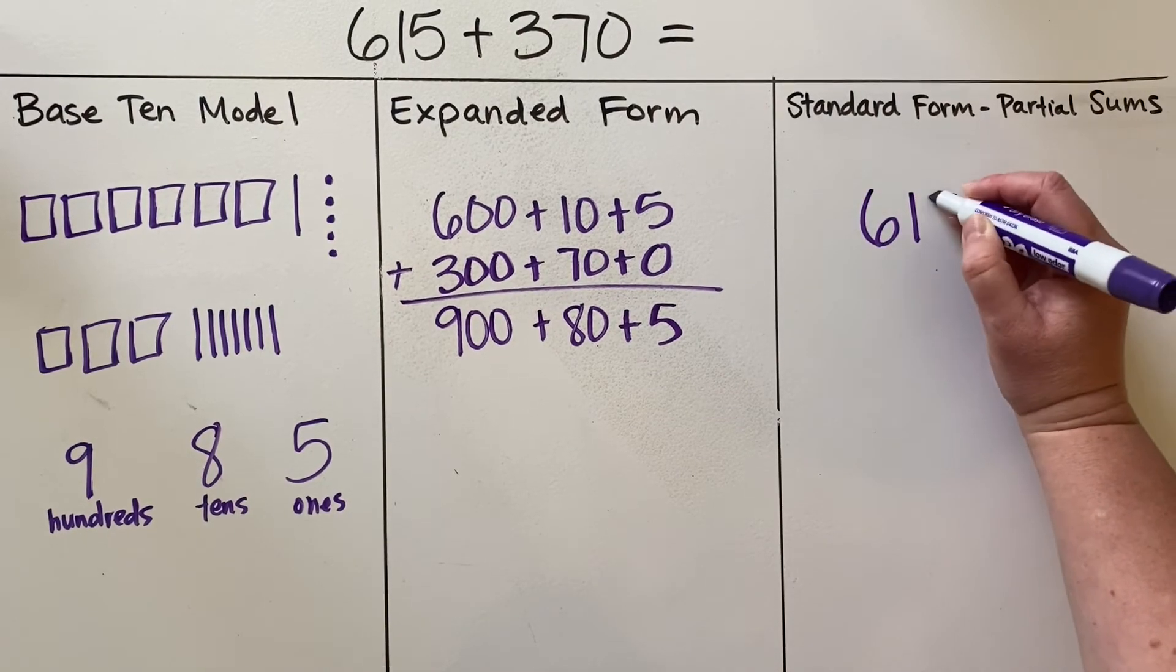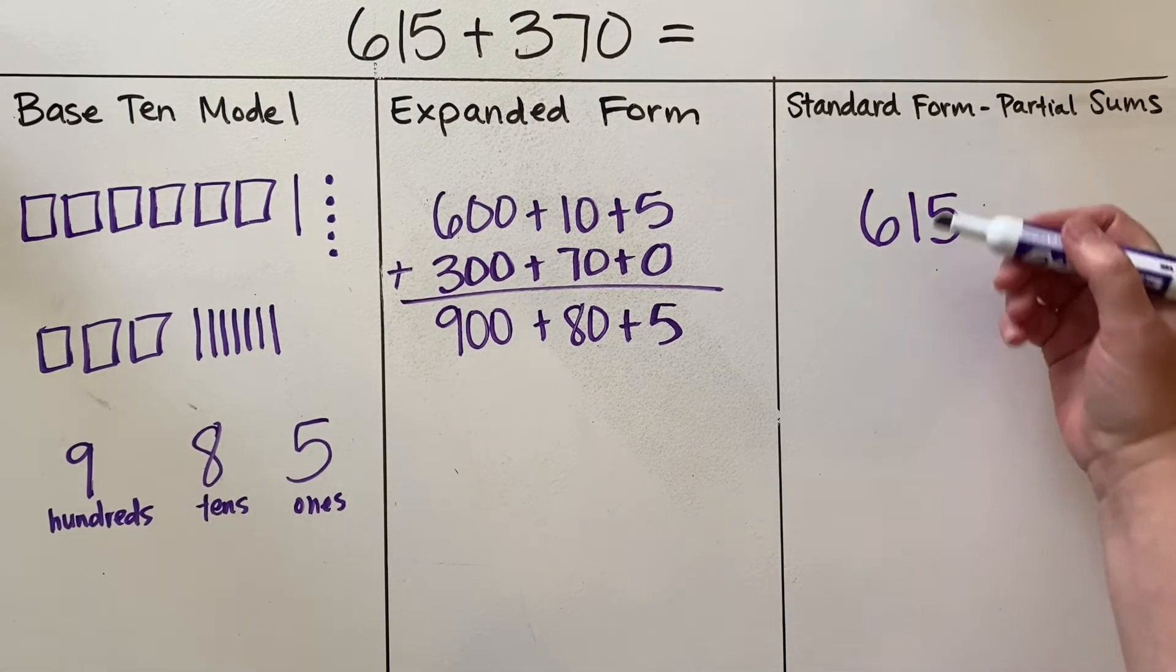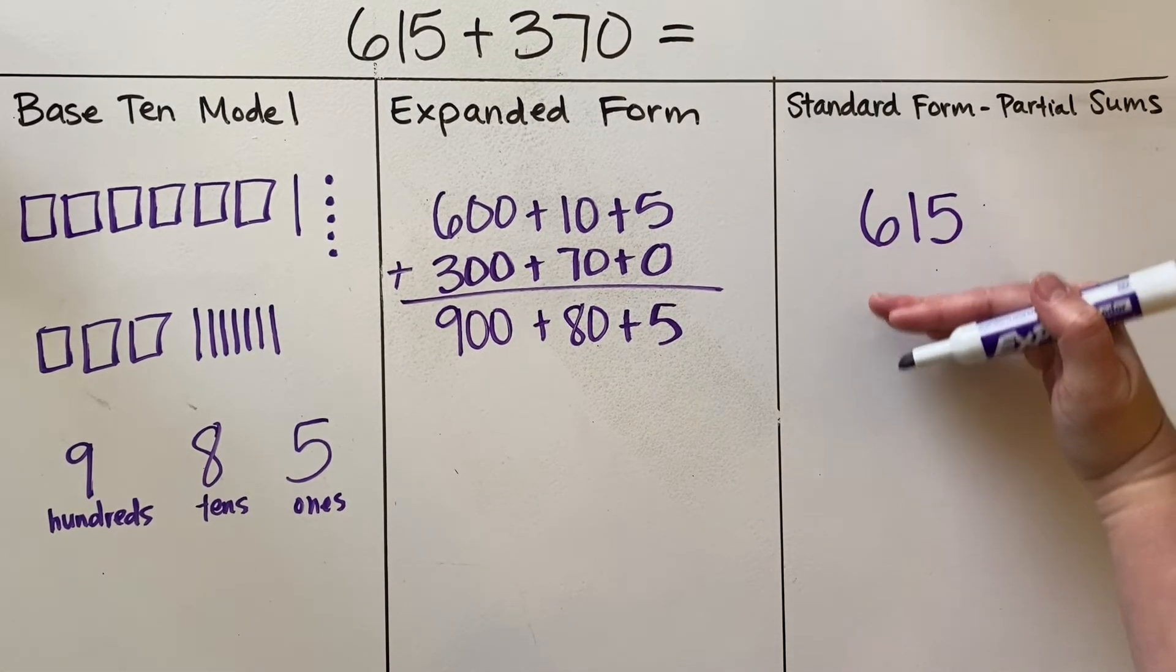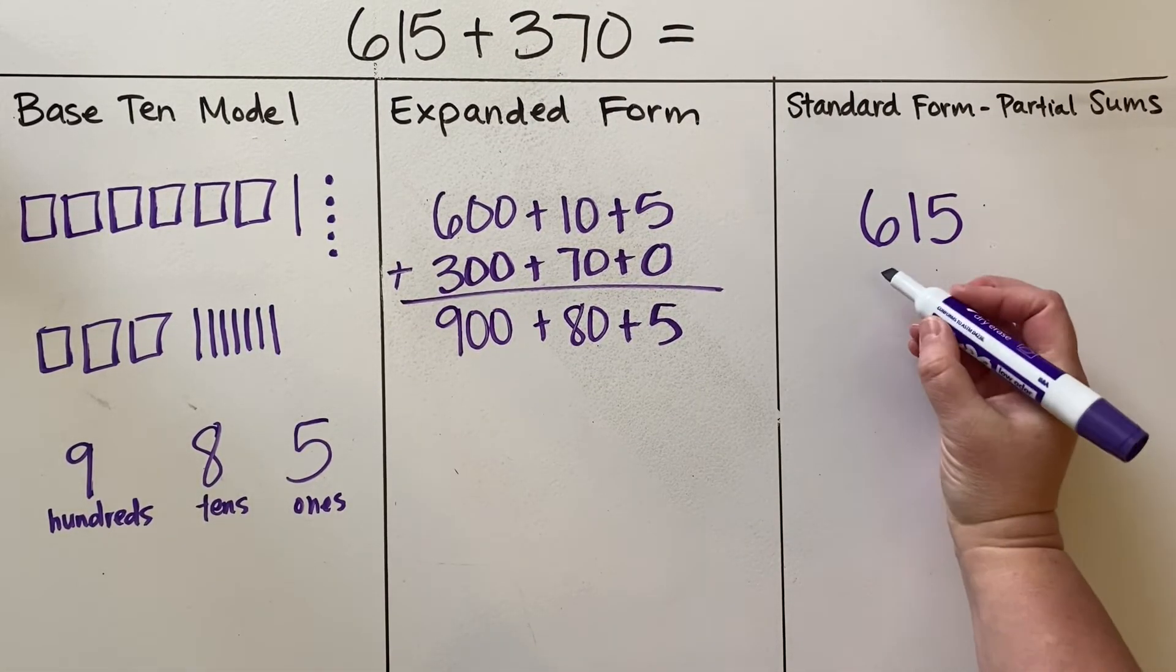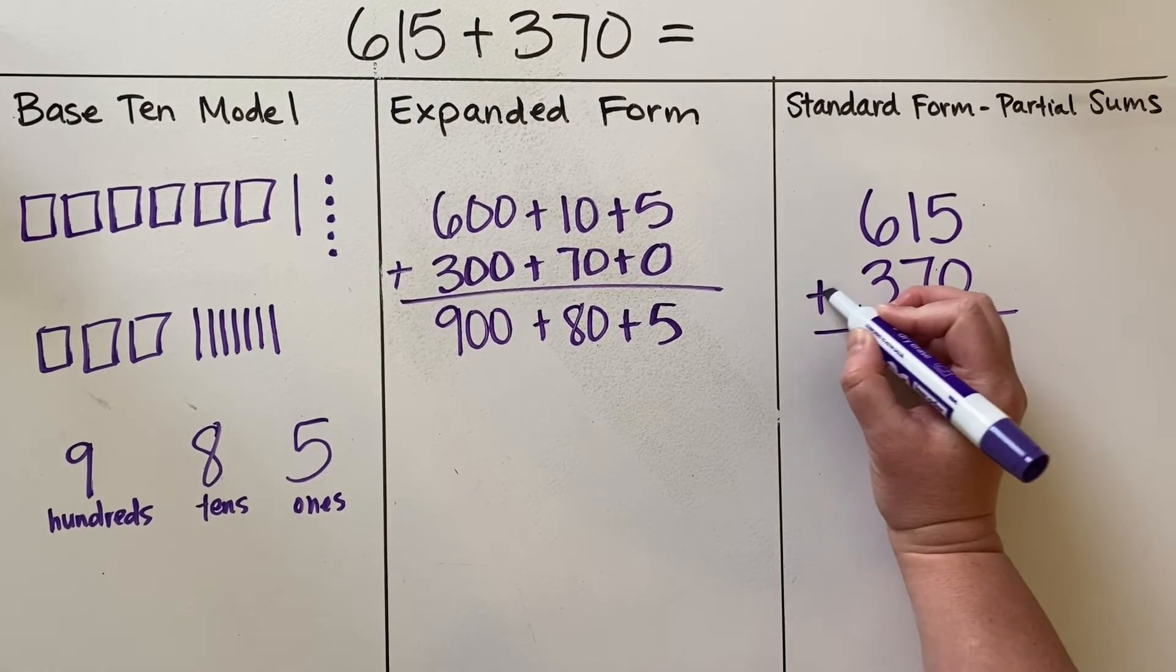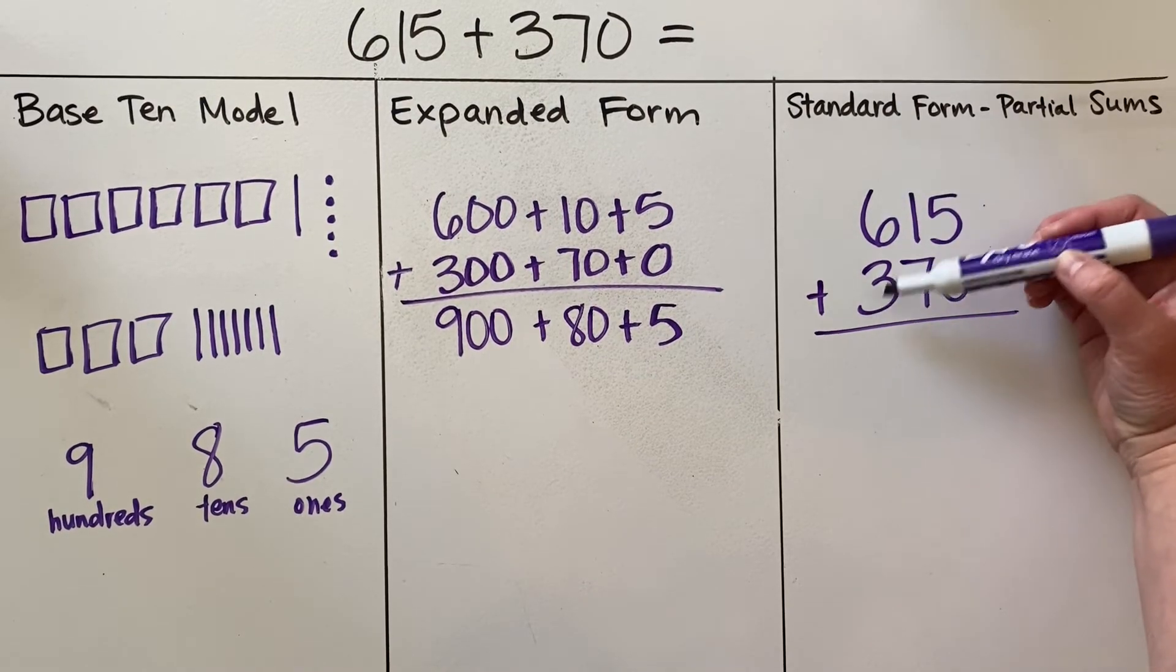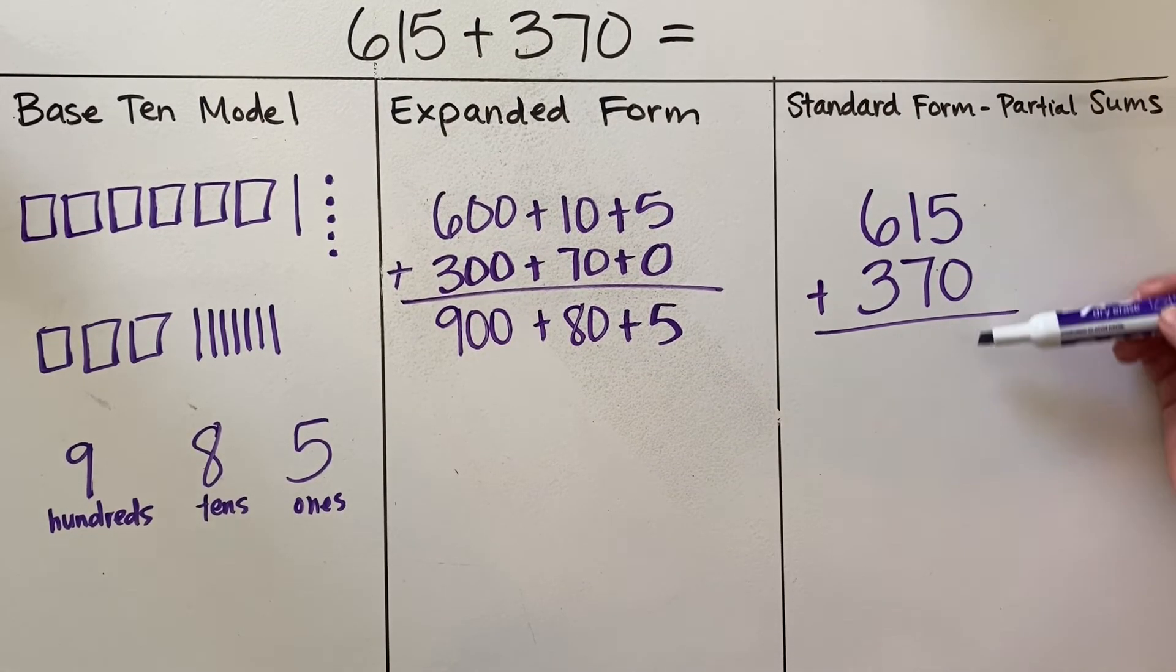If we're doing it in standard form, standard form means that we're writing the number just out normally—that's our normal number, 615. And we're going to be writing this problem out vertically, so that means we're going to put 370 below it. And again, making sure everything is lined up by place value—the hundreds are with the hundreds, the tens with the tens, and the ones with the ones.